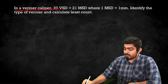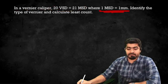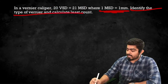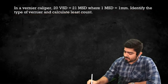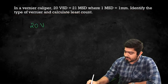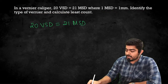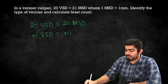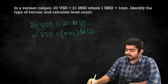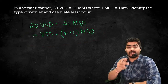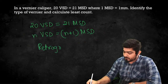New question: In a Vernier Caliper, 20 Vernier Scale Divisions are equal to 21 Main Scale Divisions, where 1 MSD = 1 mm. Identify the type of Vernier. Here N VSD = (N+1) MSD — this happens in a Retrograde Vernier Caliper.